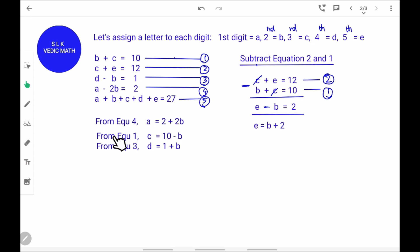From equation 1, we got C equal to 10 minus B. From equation 3, we got the D value equal to 1 plus B.